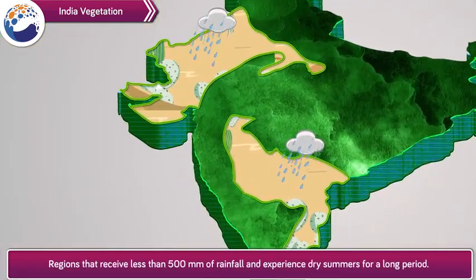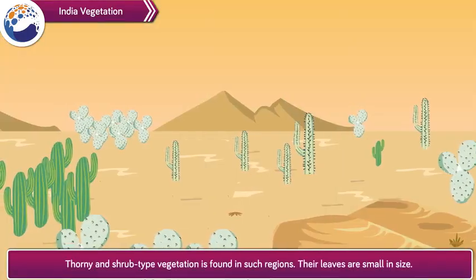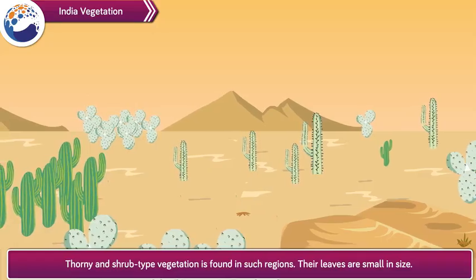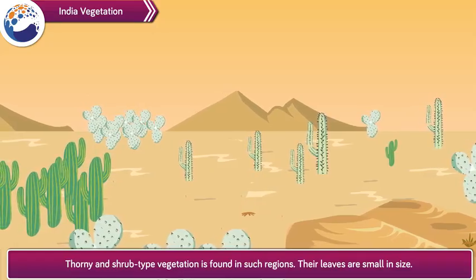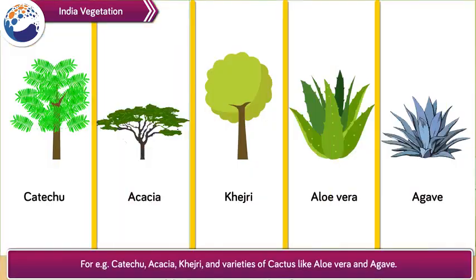Regions that receive less than 500 mm of rainfall and experience dry summers for a long period have thorny and shrub type vegetation. Their leaves are small in size. For example, catechu, acacia, khejri and varieties of cactus like aloe vera and agave.